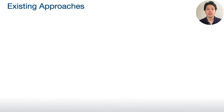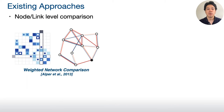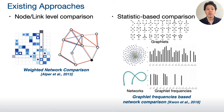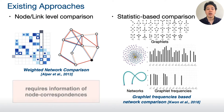To perform network comparison, many researchers introduce various methods. One approach is providing a detailed level comparison by visually comparing multiple networks. Another approach is using some statistics such as the frequency of graphlets. However, the visual approach requires one-to-one matching between each pair of nodes in different networks, called node correspondence.